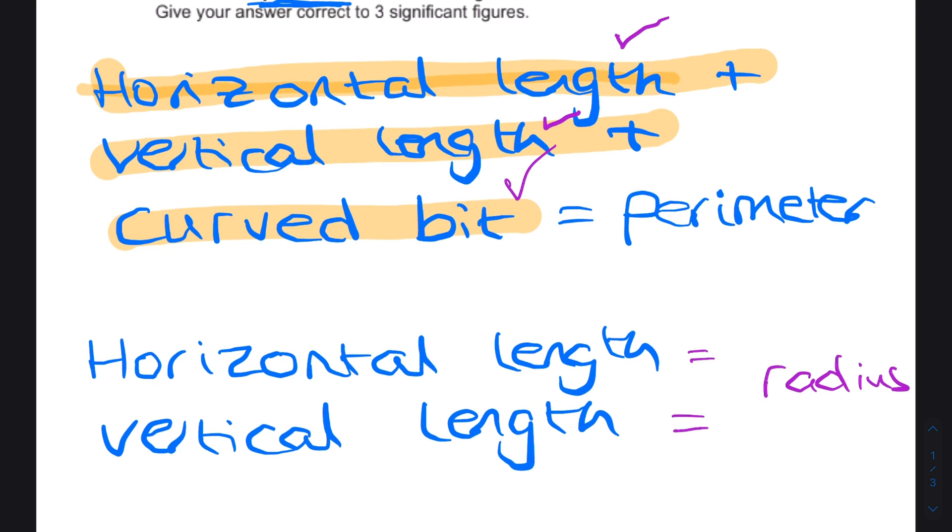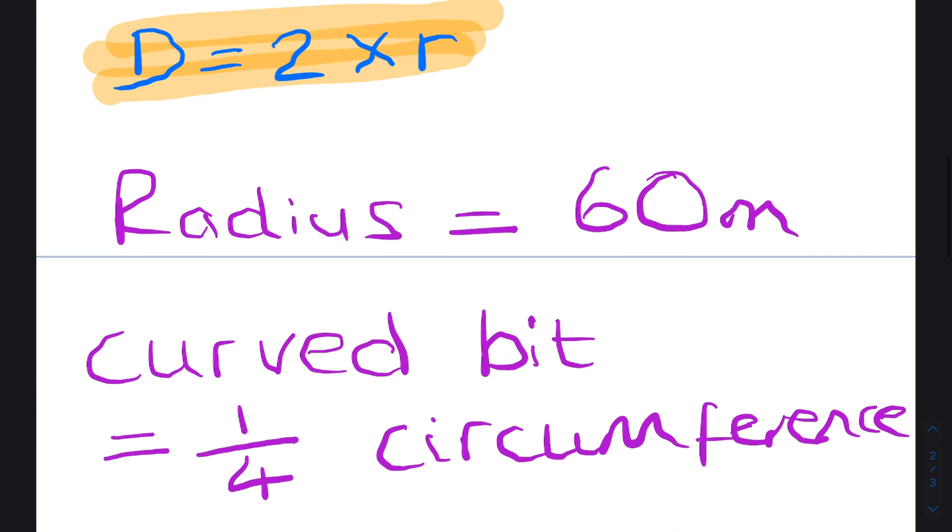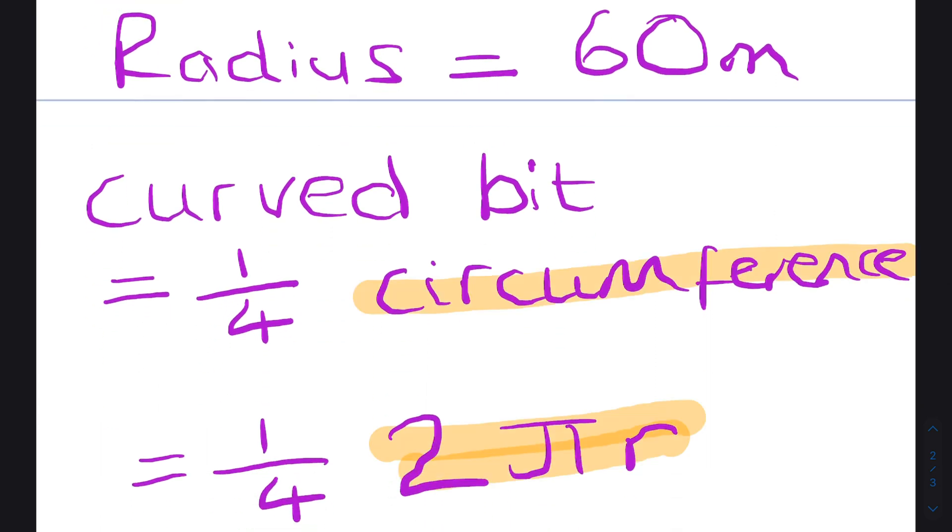So that is diameter is 2 times the radius and the circumference is 2πr.